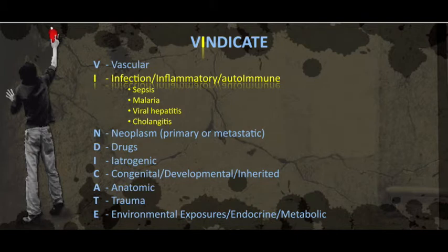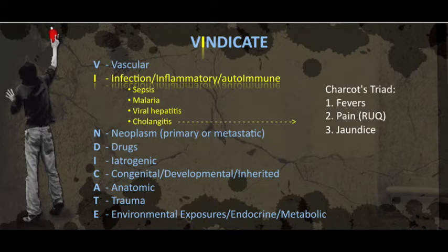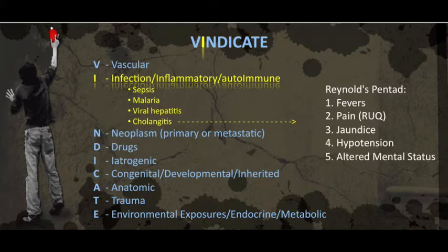Cholangitis, on the other hand, which is inflammation of the bile ducts — often bacterial — is a post-hepatic obstruction, preventing the bile from getting from the liver to the GI tract. I would highly recommend memorizing Charcot's Triad and Reynolds Pentad. They love to test you on these, so if you haven't memorized them already, you might as well do it now.